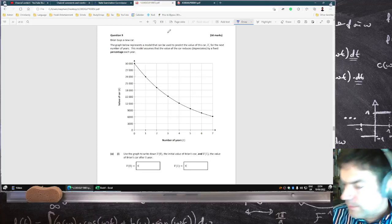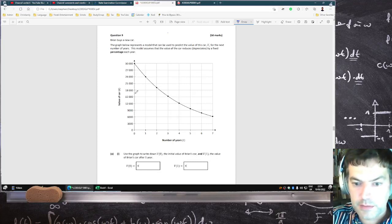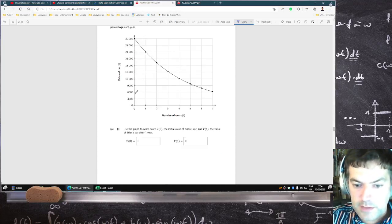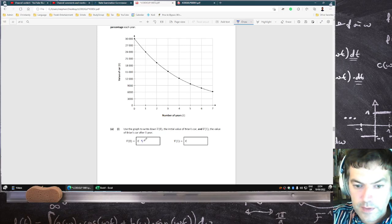Brian buys a new car. The graph below represents the model predicted value. Use the graph to write down the initial value, 30,000, and then the value after one year, 24,000.